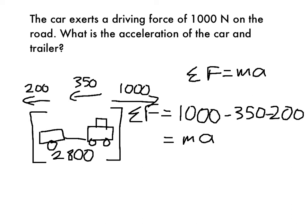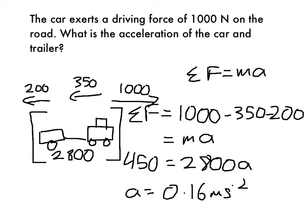And so, 1000 minus 350 minus 200. So the net force is 450 newtons forward. That's the 1000 minus these two. It leaves 450 newtons forward equals 2800, the mass of the whole system, times a. And so, a is 450 divided by 2800, 0.16 meters per second squared is the acceleration.